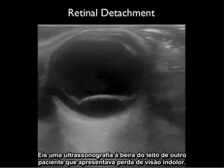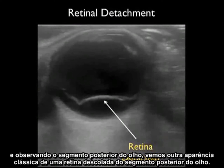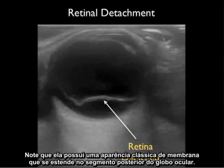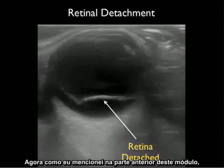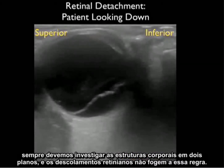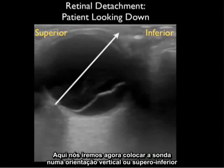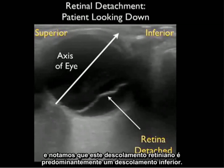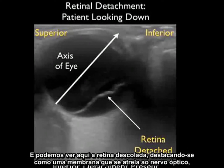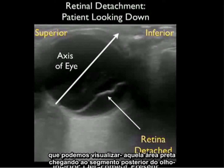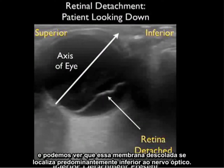Here's a bedside ultrasound from another patient who had painless loss of vision. Looking into the back of the eye we see another classic appearance of a retina detached off the back of the eye — a membrane type appearance that layers out in the back of the eyeball. We should always investigate body structures in two planes, and retinal detachments are no exception. Placing the probe in a vertical up-and-down orientation with the patient looking down, we can best see the inferior aspect of the eye. The detached retina presents as a membrane tethered at the optic nerve, predominantly located inferior to it.